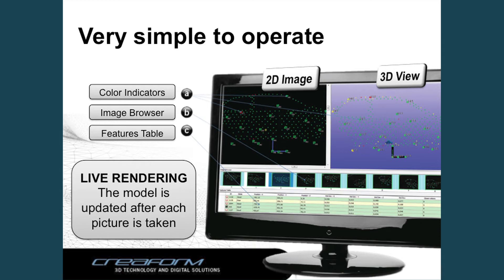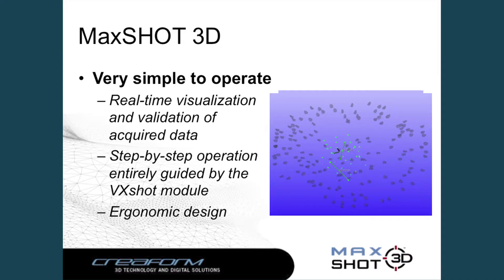In the software, we have color indicators that guide you: if a specific target is red, this means you need more shots and need to correct your model. In the image browser, each picture has a colored frame — green, yellow, or red — giving you a general quality rating for the picture you just took. What is really great is that it's a live update: on the right-hand side 3D view, you can see the 3D model of the targets, and this updates each time you take a picture, recomputing the 3D model instantly in a fraction of a second. Even without strong experience in photogrammetry, you can rely on the software to guide you through the process.